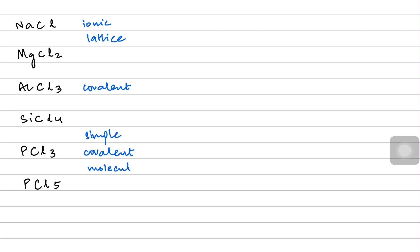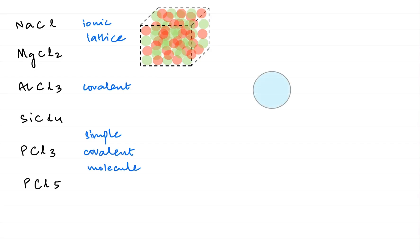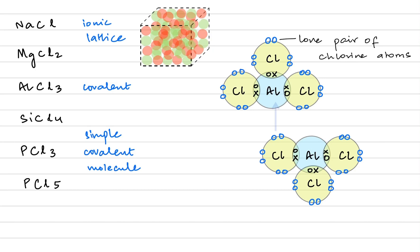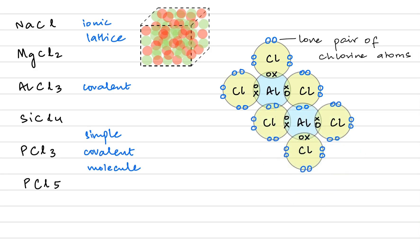Sodium chloride and magnesium chloride have giant ionic lattice structures. For aluminium chloride, even after making three covalent bonds with three chlorine atoms, the aluminium atom still does not have a complete octet. The lone pairs on the chlorine atoms play their part: a second AlCl₃ molecule provides a chlorine lone pair donated to the aluminium atom via a dative covalent bond, giving us Al₂Cl₆.